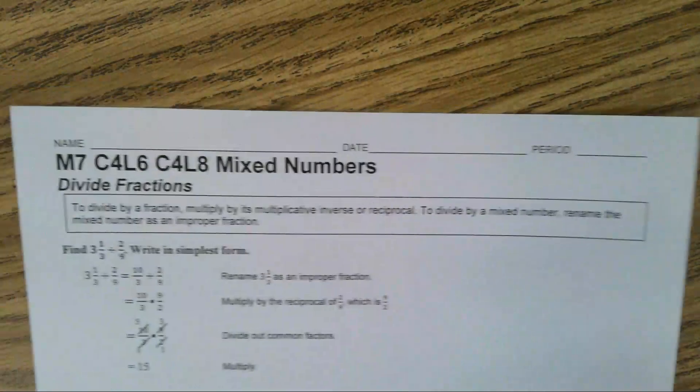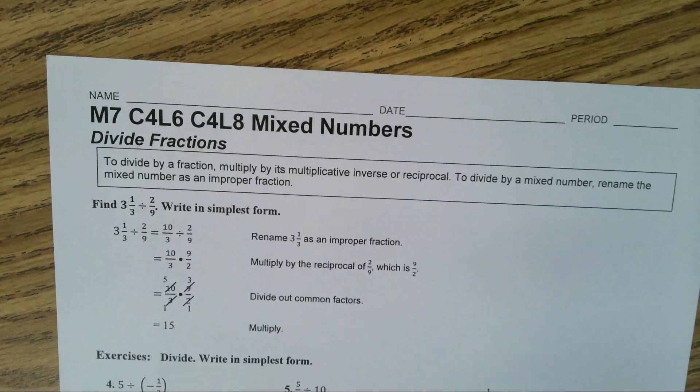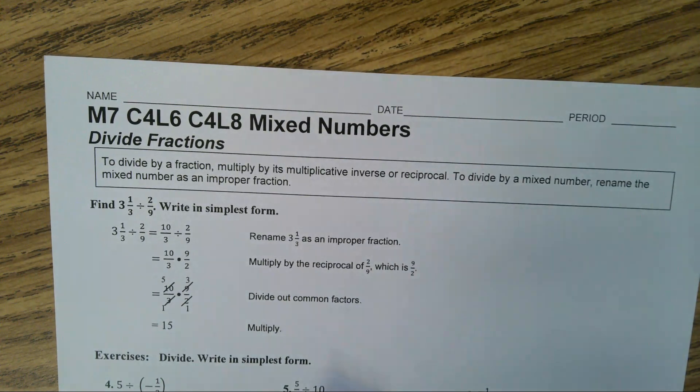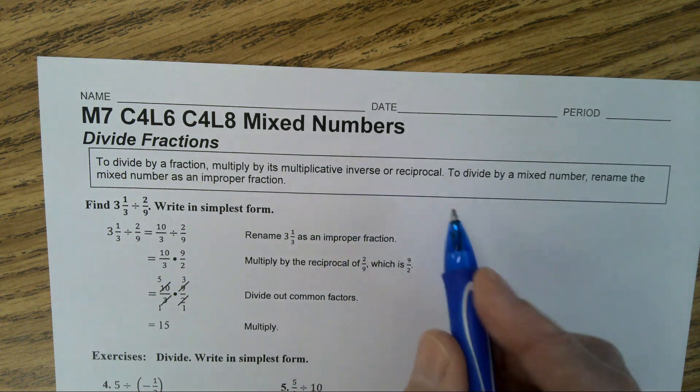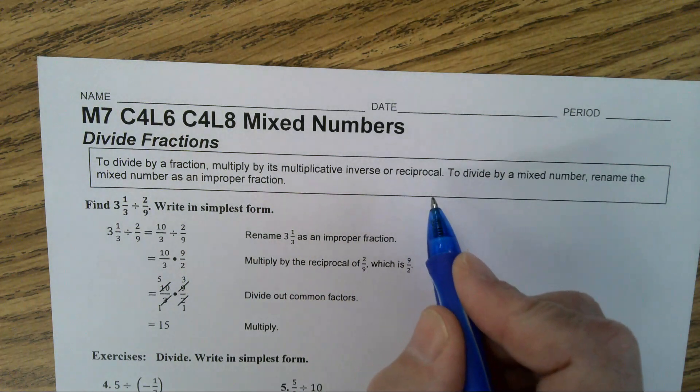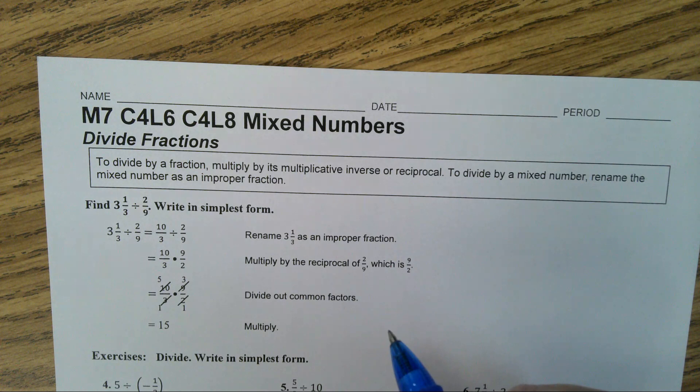Turn the paper over. Divide fractions. To divide by a fraction, multiply by its multiplicative inverse or reciprocal. In other words, you flip the second fraction.